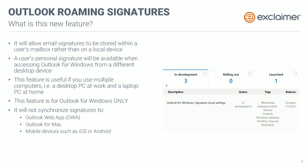So, Outlook roaming signatures — what is it? It's a feature that was announced fairly recently. It was due to go live around July/August time, and has subsequently been pushed back, as of the time of this webinar, to October this year. However, that is subject to change, as with everything else on Microsoft's roadmap. Essentially, this feature will allow email signatures to be stored in the user's mailbox rather than traditionally on the local device. The benefit here is that the user's personal signature will be available to them when accessing Outlook from a different PC or laptop.